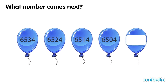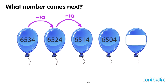What number comes next? 6534 minus 10 is 6524. 6524 minus 10 is 6514. In each step the numbers go down by 10. 6504 minus 10 equals 6494. The next number is 6494.